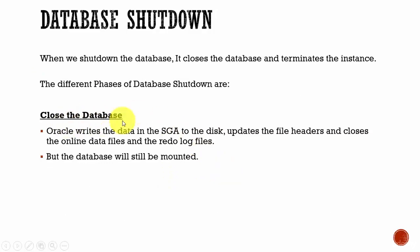The first step is you close the database. In this phase, Oracle will write all the data present in the shared global area to the disk, updates all the file headers with the latest system change number, and then closes all the online data files and the redo log files. Now the database will come to the mount mode. That's the first phase.